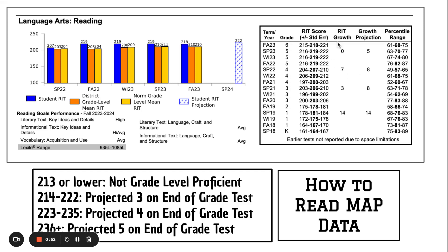This child scored a 218, which is in the 68th percentile range. The RIT score probably doesn't mean much to a parent, but you always want to see the numbers going up. It is very common to go from spring and then drop back for fall because of summer break — so that is very common. You can also see your child's percentile go up and down, because the older they are, the higher the RIT score is supposed to be, which means the percentile will also change.